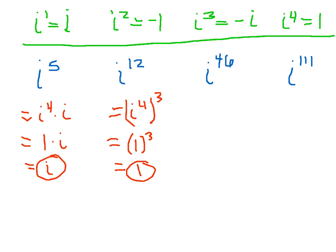i to the 46. If we just look at this, we can see that if it's divisible by 4, if the exponent is divisible by 4, then it's going to be 1. But if it's not divisible by 4, but divisible by 2, then chances are it's going to be negative 1. Let's just show that here.